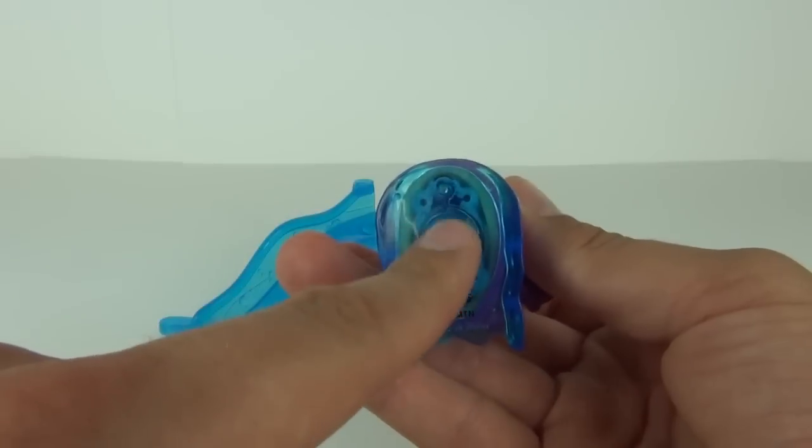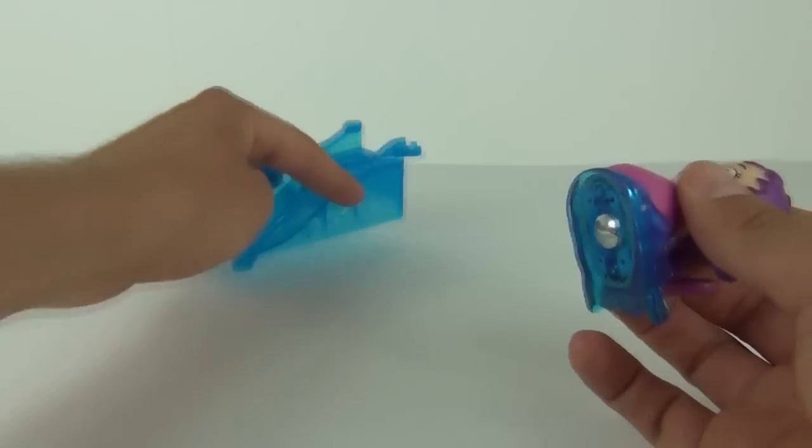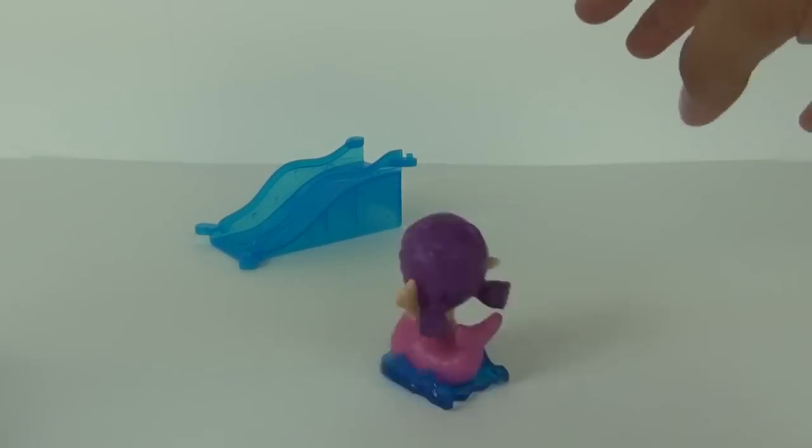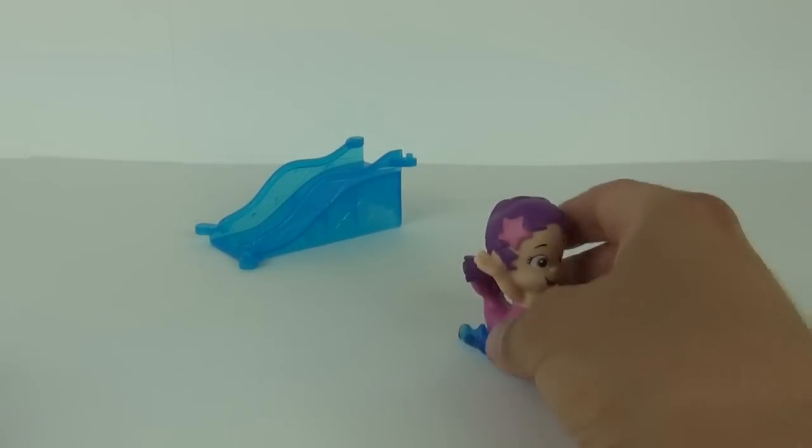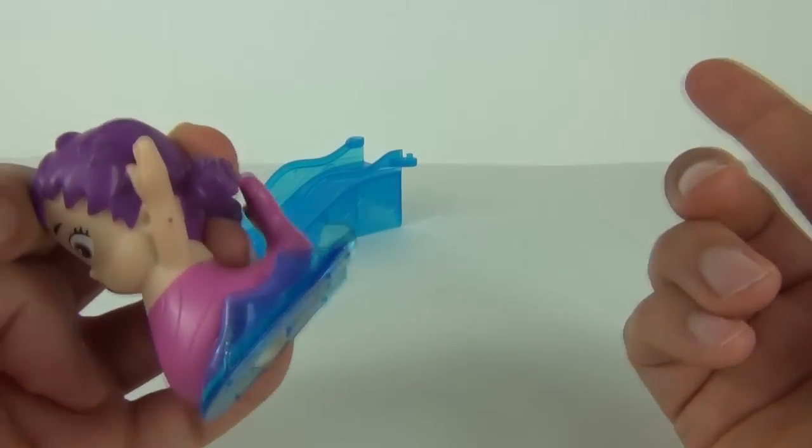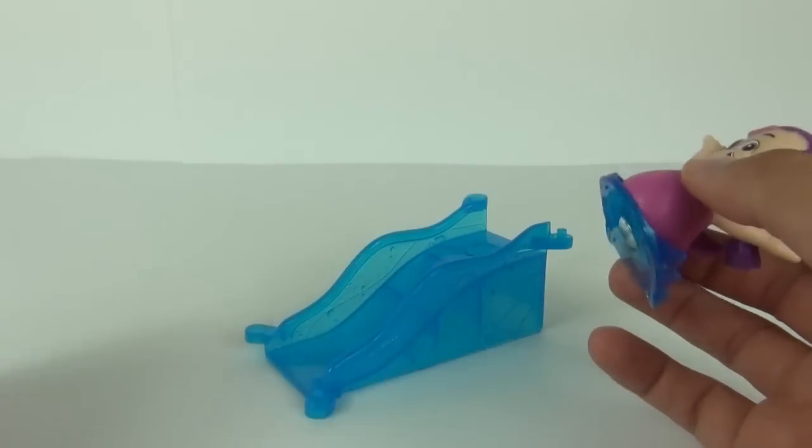And as a bonus, we do get a roller ball underneath which you can use to push your figure along, and you can spin them around as well on that ball. So lots of fun to be had there, and we do have the water splashing underneath her tail.